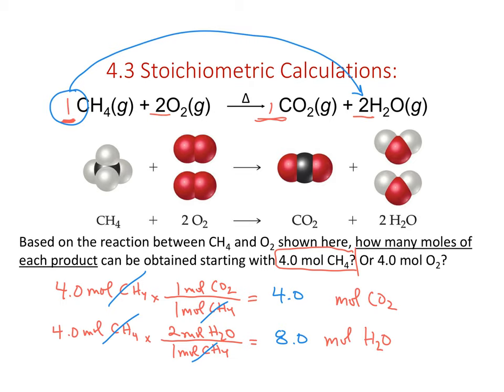This may seem complicated, but think of it as a recipe. The recipe for a loaf of bread needed two and a half cups of flour for one loaf. If you want to make ten loaves, ten times two and a half gives you 25 cups of flour. We're doing the same calculations here, using coefficients from the balanced chemical equation to relate how much material we start with and how much we expect to make.